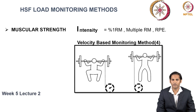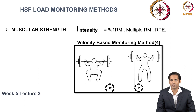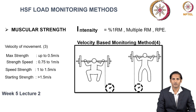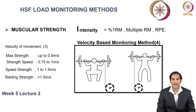In the velocity-based monitoring method, a device monitors the velocity of movement using a linear positioning transducer technology or an accelerometer technology. Velocity of movement is categorized as max strength, strength speed, speed strength, or starting strength, and every parameter has a predefined velocity of movement. When your aim is to increase muscular strength, the velocity of movement should be up to 0.5 meters per second.